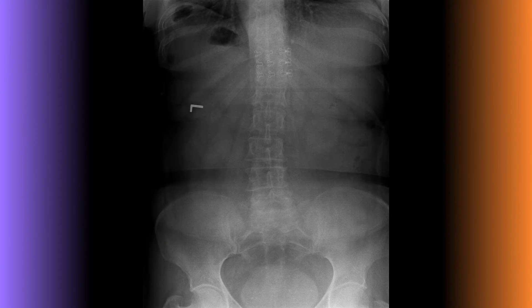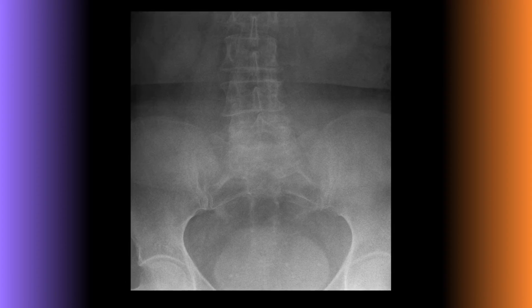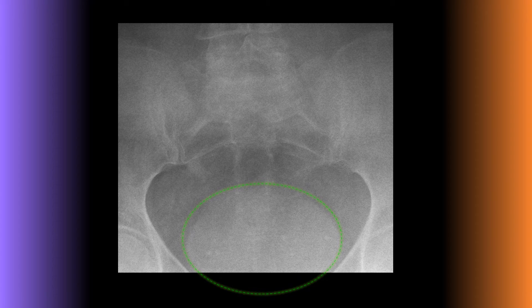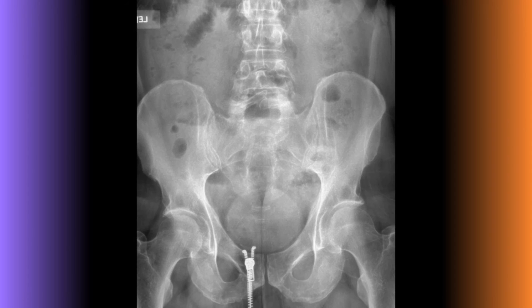One of the more commonly seen artifacts in the pelvic basin is that of a full bladder. A full bladder on x-ray may appear as a large mass within the pelvic basin — this is just a normal full bladder and not to be confused with a pelvic tumor. Don't forget, a full bladder can appear as a round dense mass within the pelvic basin.